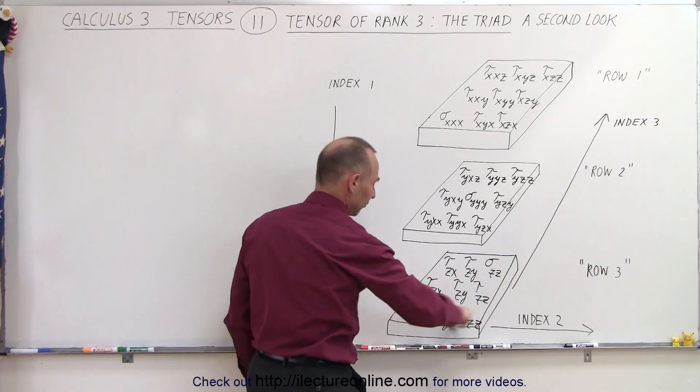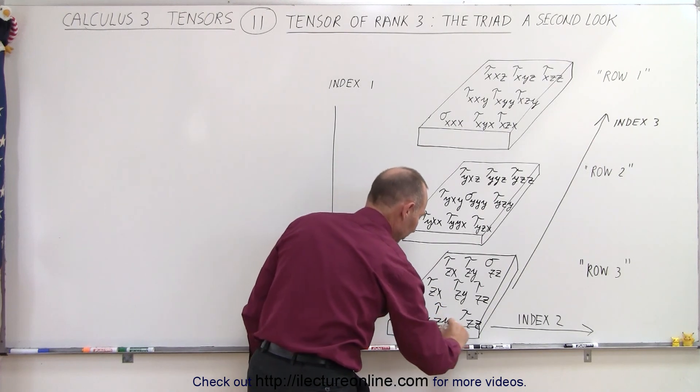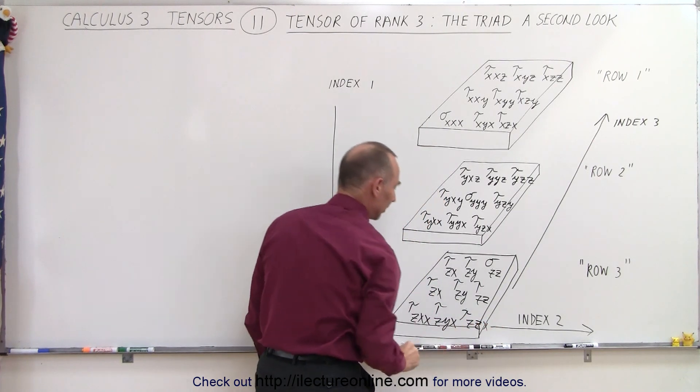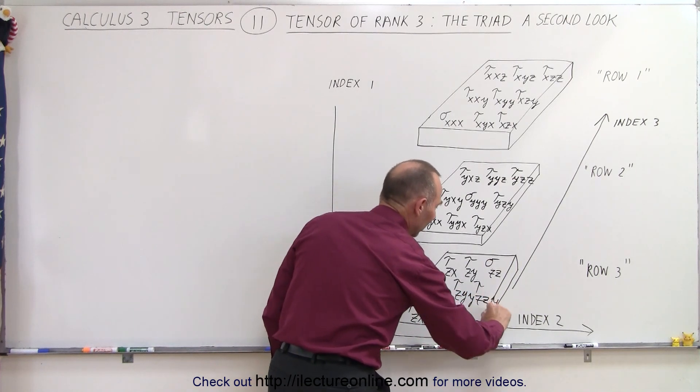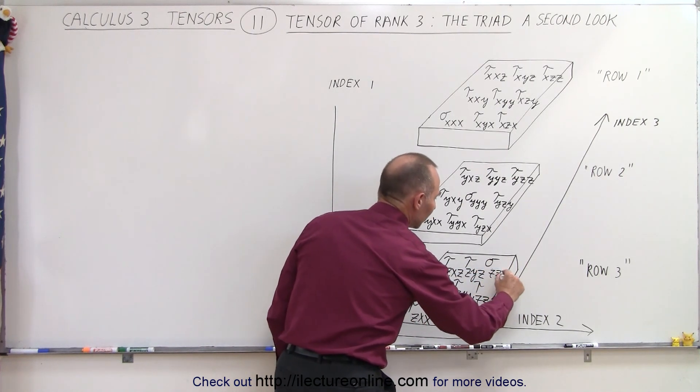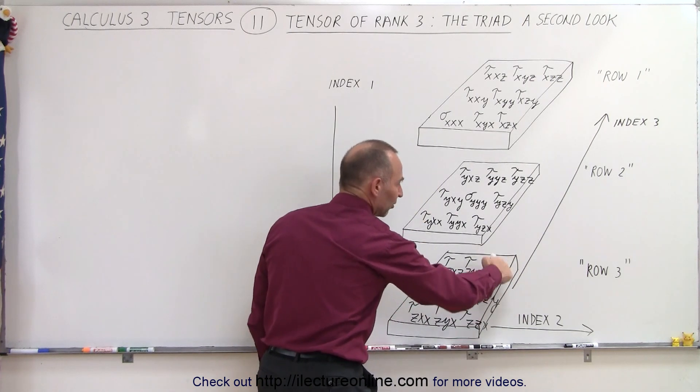So here, on the front, we go from front to back, these are all x's in the front for the third index. The second is all y's, that would be the second page, and the third, these are all z's.